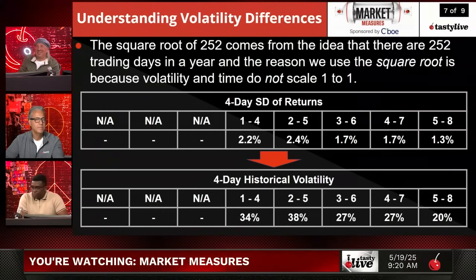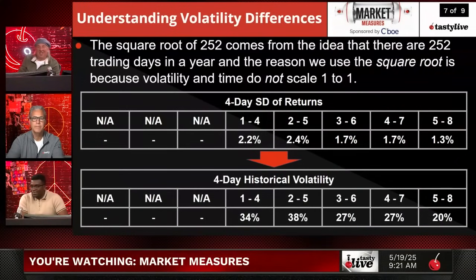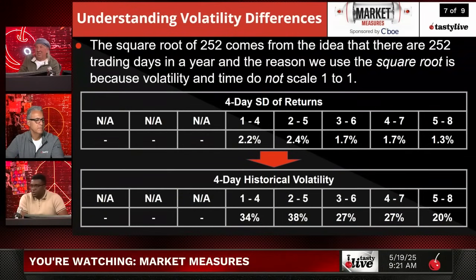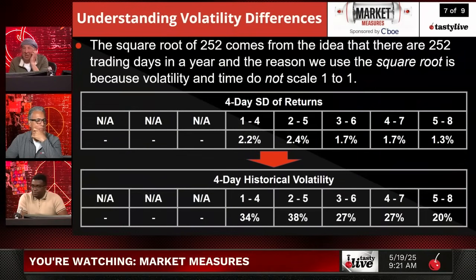The square root of 252 comes from the idea that there are 252 trading days a year, and the reason we use the square root is because volatility and time do not scale one-to-one. So you have the four-day standard deviation of returns and the four-day historical volatility — just multiplying everything out to show the whole process of how we get from four-day standard deviation of returns to four-day historical volatility.